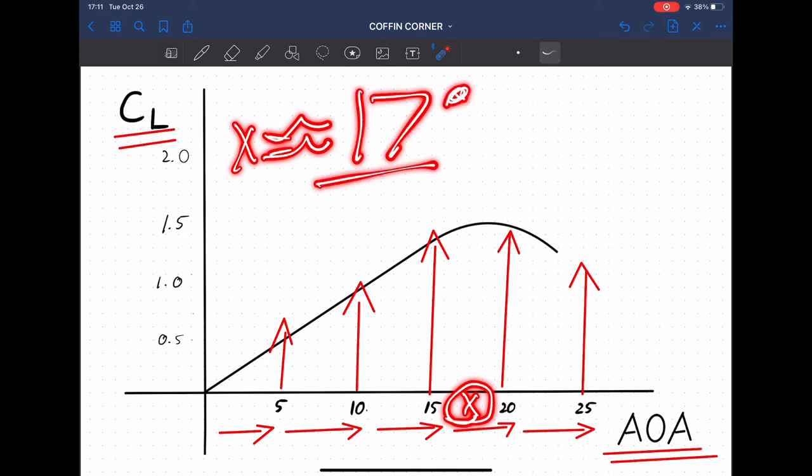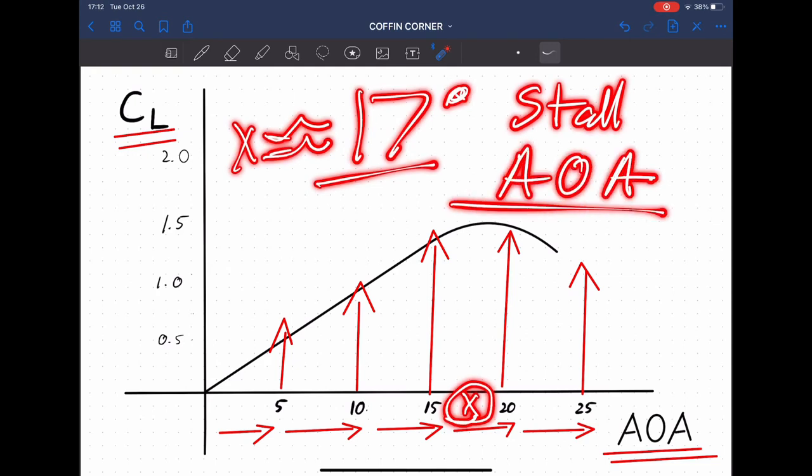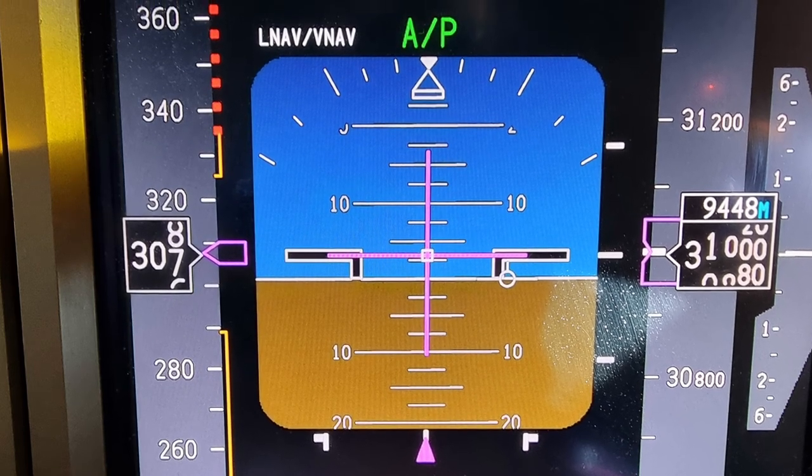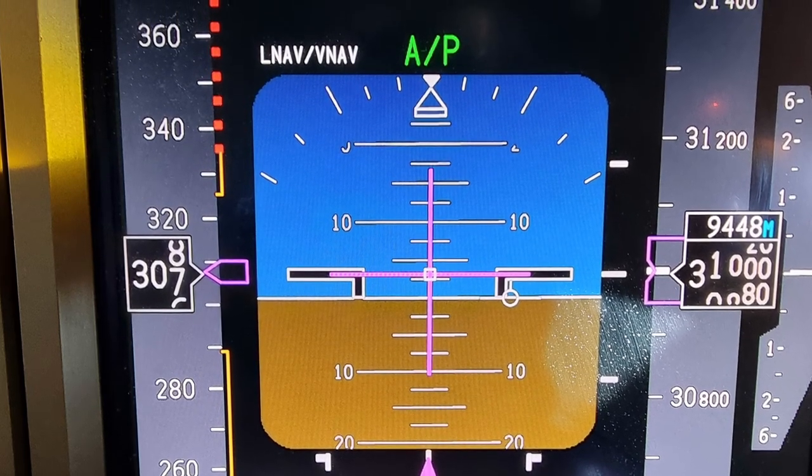So if an airplane is at 40 to 50,000 feet and approaching the low-speed mop buffet and is not at a pitch attitude of 17 degrees, how could he possibly be stalling? Because the stalling angle of attack does not change with altitude. And at that altitude, airplanes are still maintaining 1G flight.